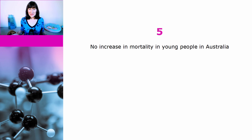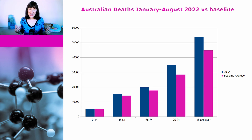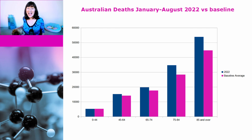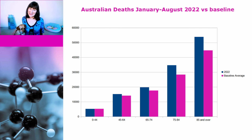This brings me to the fifth reason we know anti-vaxxers are lying: there has been no increase in mortality in young people in highly vaccinated Australia. Deaths in January to August 2022 compared with the baseline average show no increase in mortality in the 0 to 44 age group. When I say highly vaccinated, 97.3% of people over 16 in Australia have received at least one dose, and 61% of people aged 5 to 15 have also. Of course, anti-vaxxers don't just stop at vague claims — pretty much every time someone dies, they jump on it and falsely claim the death was caused by the vaccine.